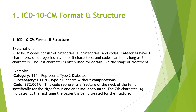As you all know, ICD-10 codes consist of categories, subcategories, and codes. Categories have three characters, and subcategories will vary from four to five characters. The complete code can be as long as seven characters — it doesn't always have to be seven, but it can be up to seven. For example, category E11 represents type 2 diabetes.